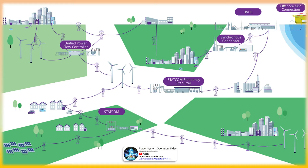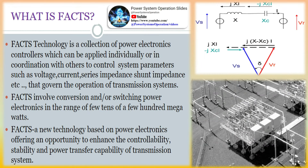FACTS is static equipment used for the AC transmission of electrical energy. It is generally a power electronics-based device, meant to enhance controllability and increase power transfer capability. FACTS can be described as the modification of the AC transmission system by using power electronics or with the help of other static controllers.